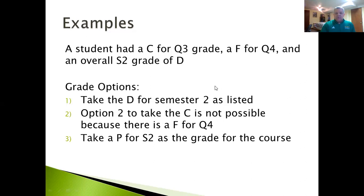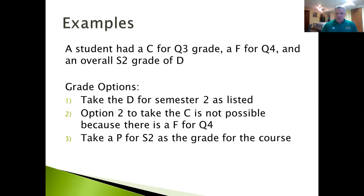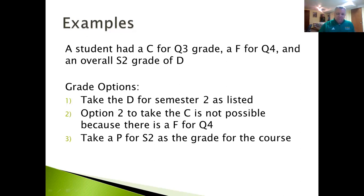The last example: a student had a C for quarter three, a failing grade in quarter four, and an overall grade of a D. Option two for the C grade is not possible because the student failed the fourth quarter. So the options are: take the D overall, or take the pass grade. If the D would lower the GPA, the pass grade would not impact that GPA component.